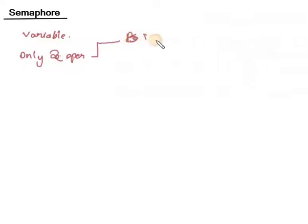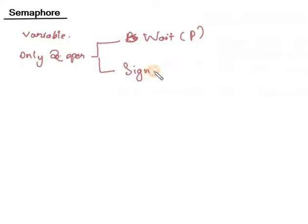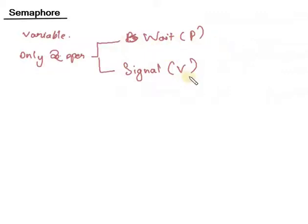The two operations are: wait, which is the P operation, and signal, which is the V operation. So P stands for wait and V stands for signal. These two operations are important: the wait operation and the signal operation.